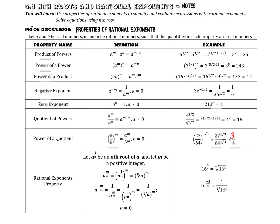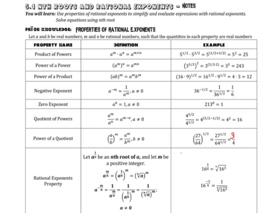The rational exponents property says that a to the power of m over n can be rewritten as the nth root of a to the power of m. For example, 16 to the power of 5/4 can be rewritten as 16 to the power of 1/4 to the fifth, which gives us the fourth root of 16 to the fifth power. Since the fourth root of 16 is 2, this becomes 2 to the fifth, which is 32 — much easier than computing 16 to the fifth power directly.